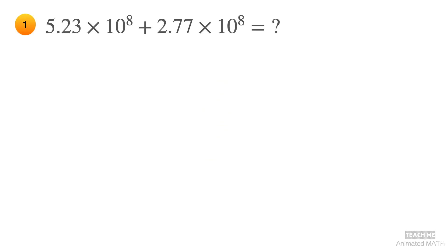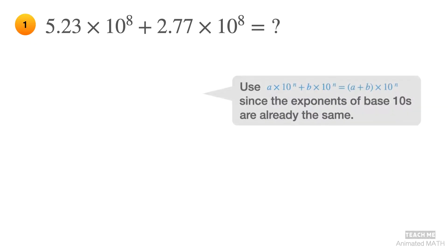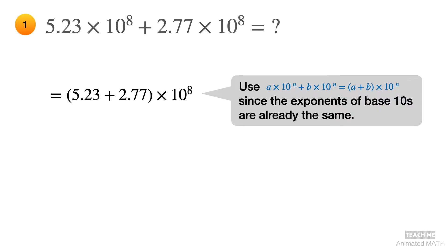This example is pretty easy since both base 10s have the same exponent, which is 8. Since it is already following the one special rule mentioned earlier, that means you simply have to add 5.23 and 2.77. The final answer is 8 times 10 to the 8th power.